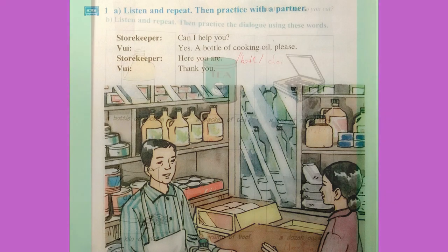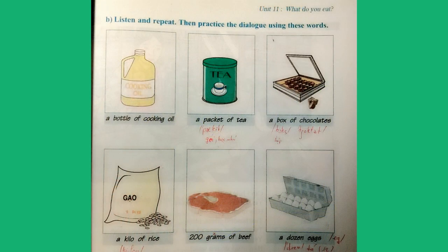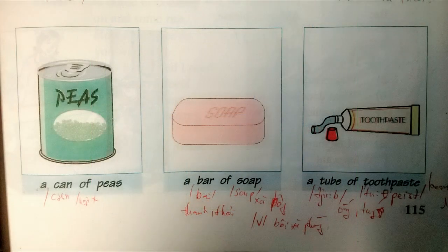Exercise 1B: Listen and repeat, then practice the dialogue using these words. A bottle of cooking oil. A packet of tea. A box of chocolates. A kilo of rice. 200 grams of beef. A dozen eggs. A can of peas. A bar of soap. A tube of toothpaste.